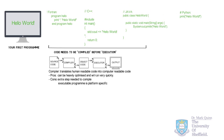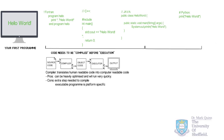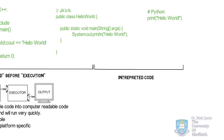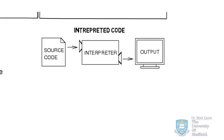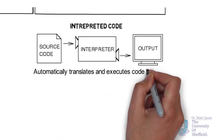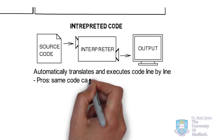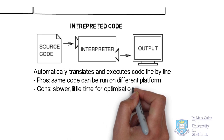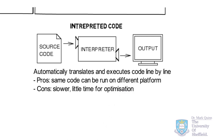An interpreted programming language simplifies this process by removing the need to manually compile your program before running it. In the example of Python, you write your program and when you run it the Python interpreter assesses the program line by line and converts and passes the instructions to the computer. While ultimately not as fast as compiled languages, an interpreted language is easier to implement and use — there's no need for a separate compilation stage so you can execute code directly on the fly.